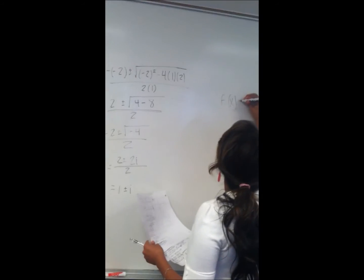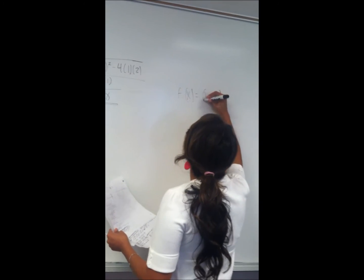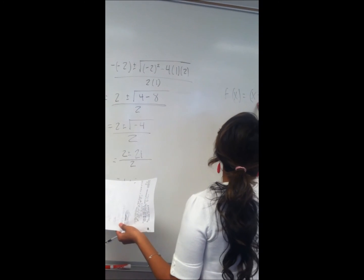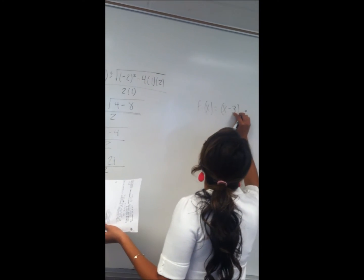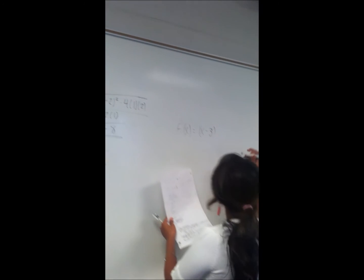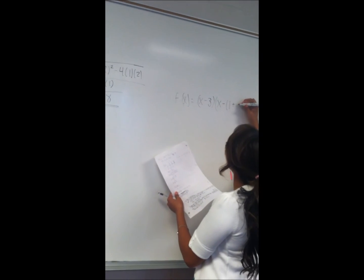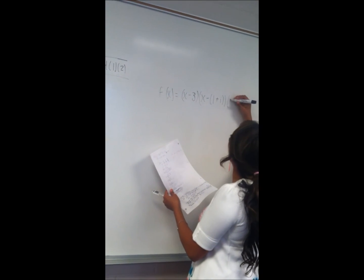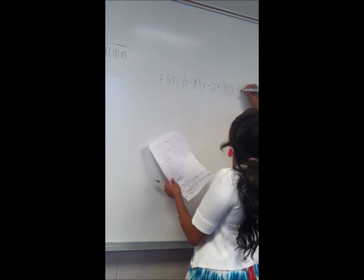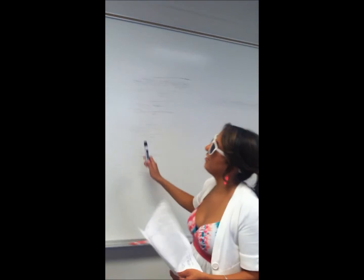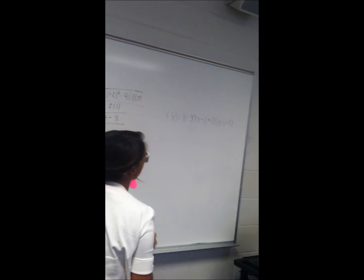So if we were to write this problem in factored form, we would have f of x equals x minus three — because when we took the synthetic division, we divided by three to get a remainder of zero, so three is a factor, and setting x minus three equal to zero gives us positive three. Then we use our factors of i: x minus one plus i, and x minus one minus i. Because this is a third degree polynomial, we have three factors, and that would be perfect. Wonderful job! Lady Gaga, you win!